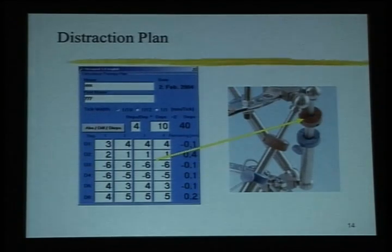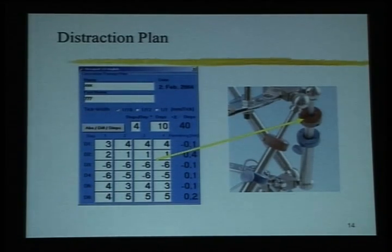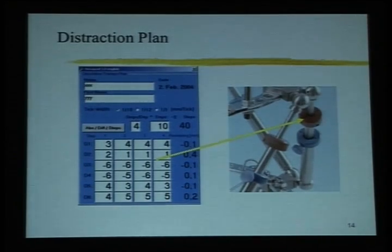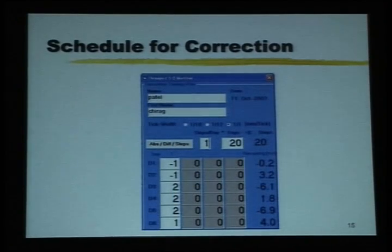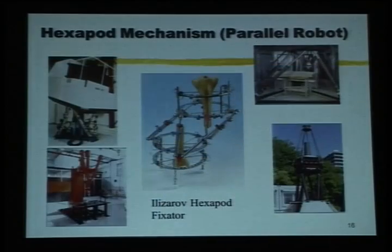The struts are numbered one to six. The software tells you: move strut number one by so many millimeters, strut number two by so many millimeters, and so on, to get correction of your deformity. It then gives you a schedule — on day one this is how it has to be moved, on day two this is how it has to be moved, and so on.